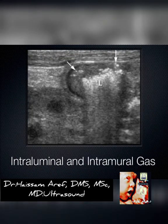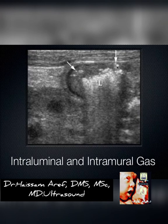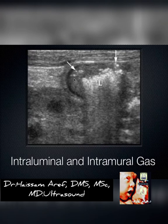Here's a mixed picture: we see intraluminal gas, which is normal, and in the wall we can make out punctate areas of intramural gas. There's also wall thickening here — if I measure from the lumen out to the edge of this wall, it's more than 4 millimeters, looking like almost a centimeter of thickness. So we know this is a disease state, and indeed this patient has air in the wall of their bowel.